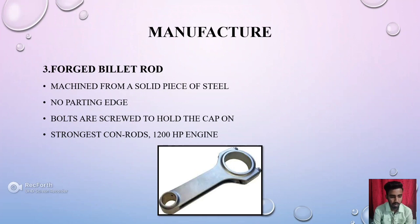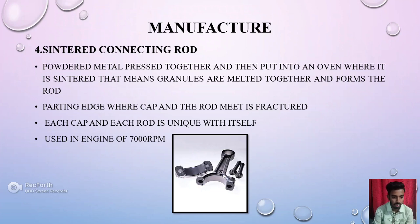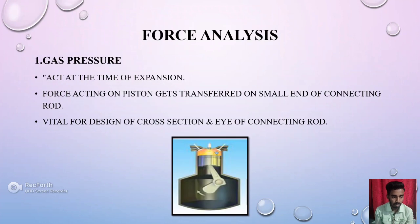Third is the folded wheel rod. A machine forms a solid piece of steel with no parting edge. Bolts are screwed to hold the cap on. This is the strongest conrod, suitable for 1200 HP engines. Fourth is the sintered connecting rod. Powdered metal is pressed together and then put into an oven where the sintering process melts the granules together to form the rods.